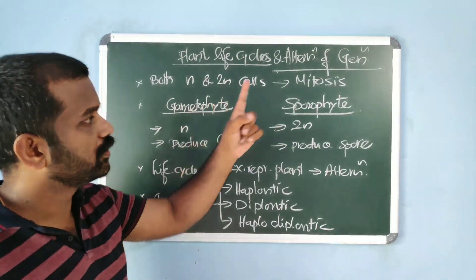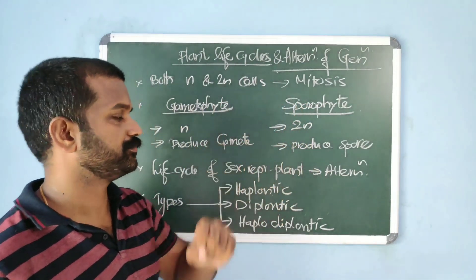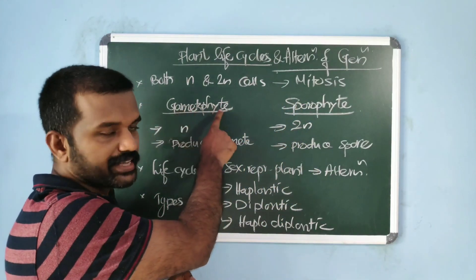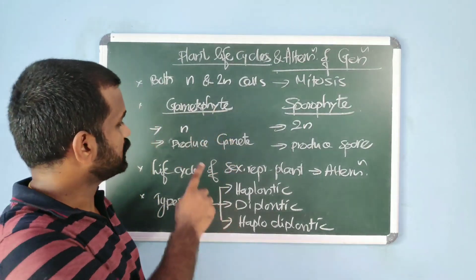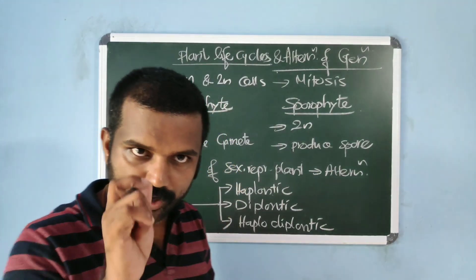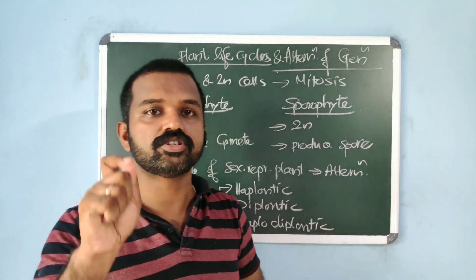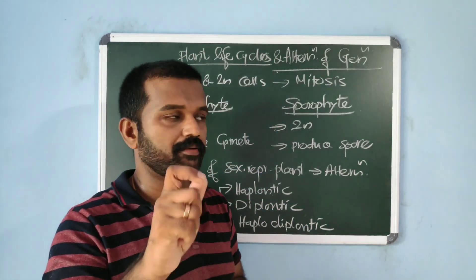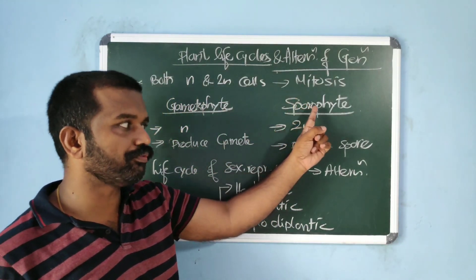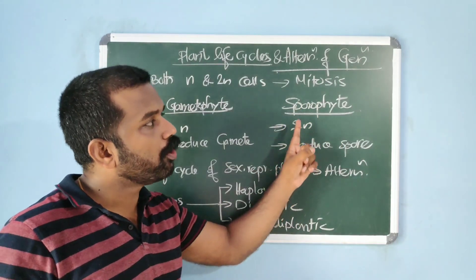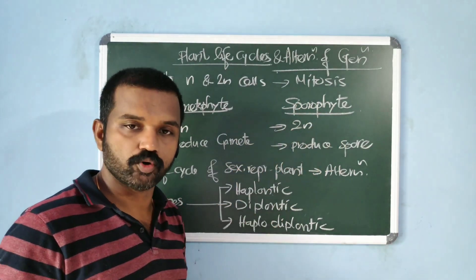Gametophyte is haploid, sporophyte is diploid. Why is it named gametophyte? Because it produces gametes. So gametophyte means a gamete producing plant body. Then sporophyte means spore producing plant body.